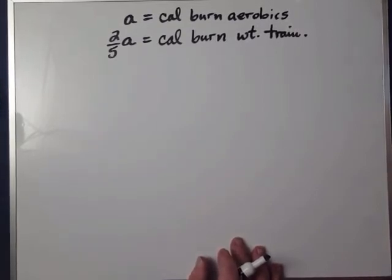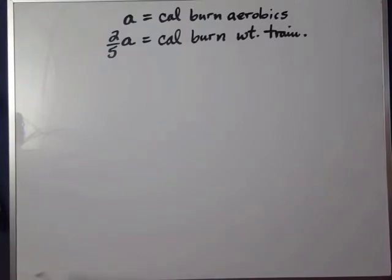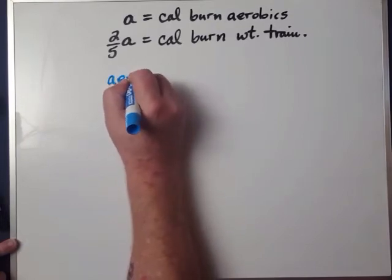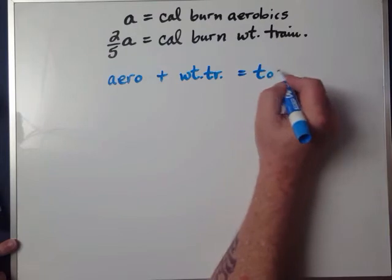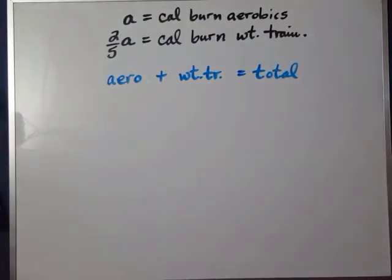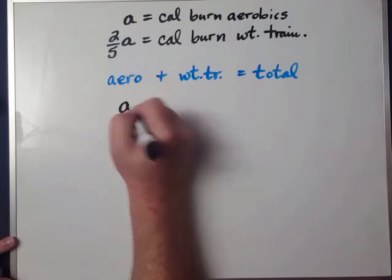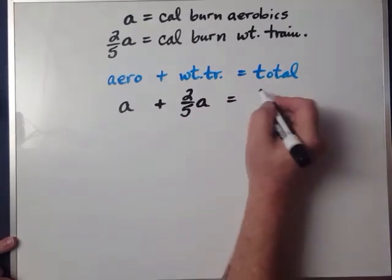We've set up our unknowns. Step two: both unknowns are in terms of the same variable. Now where's the condition in the problem that gives me the modeling equation? This is a totaling-type word problem. It says together the two activities burn a total of 371 calories, so we have calories burned by aerobics plus calories burned by weight training equals the total. In algebra: 'a' plus two-fifths 'a' equals 371.